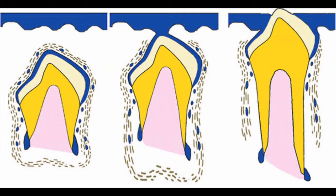Tooth eruption is defined as a developmental process which is responsible for moving the tooth from its developmental position inside the jaws to its functional position of occlusion inside the oral cavity. It is important to mention the final or functional position of occlusion because even if the tooth erupts inside the oral cavity but does not make contact with its opposing tooth, it is said to be incompletely erupted.